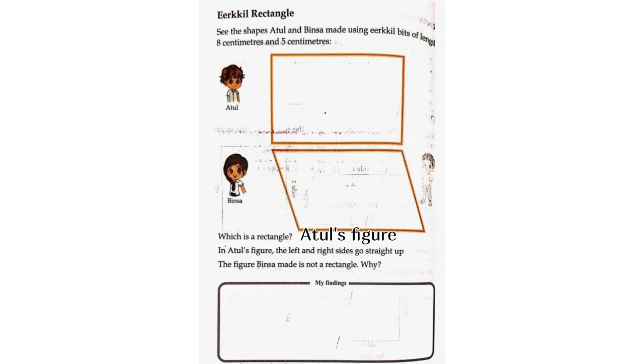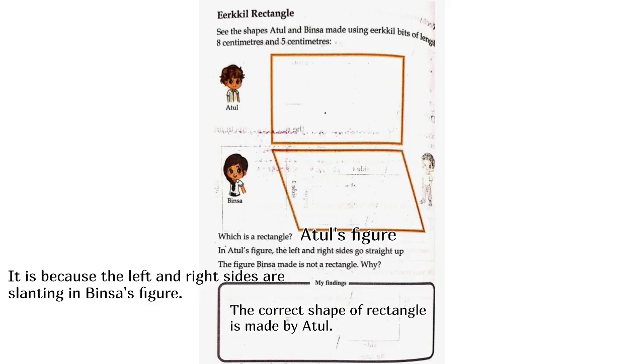The figure Binsa made is not a rectangle. Why? It is because the left and right sides are slanting in Binsa's figure. My findings: The correct shape of rectangle is made by Atul.